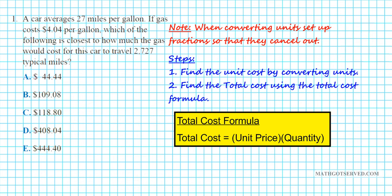Problem one reads: a car averages 27 miles per gallon. If gas costs $4.04 per gallon, which of the following is closest to how much the gas would cost for this car to travel 2,727 miles?